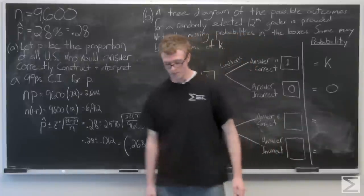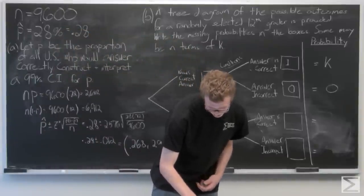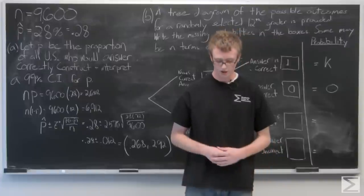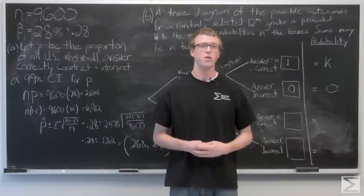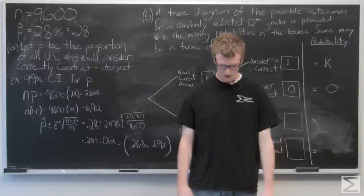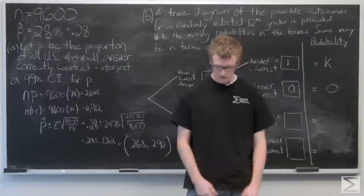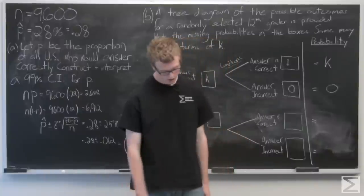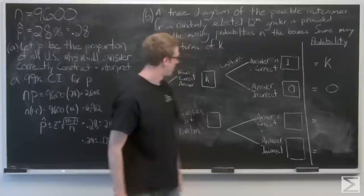Now we move on to Part B. We assume the students who know the correct answer have a 100% chance of answering correctly, which makes sense. Students who don't know the correct answer guess randomly from one of four options, so they have a 1 in 4 chance of getting the question correct. We let K represent the proportion of all U.S. 12th graders who actually know the correct answer. We're given a tree diagram showing possible outcomes for a randomly selected 12th grader.